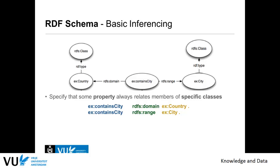To make it more explicit: we define containsCity between country and city. Each instance of a country can only use the relationship containsCity to a city as a target. For example, the Netherlands contains city Amsterdam. This is restrictive — so if you want to say a province contains a city, that is not possible according to this definition unless you define more rules.